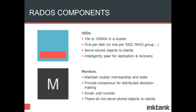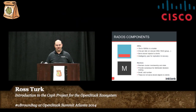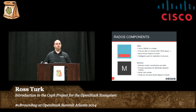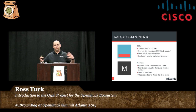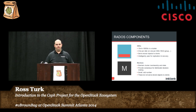Monitors, on the other hand, are a fewer number — a small, odd number. Three is the right number for most clusters; some have five. You want a small odd number because monitors vote. Their job is to understand the state of the cluster: who's in, who's out, who's up, who's down, which OSDs are part of the cluster. They also maintain what's called the crush map, which is the mapping of the cluster architecture used to determine where to put data. The monitor does not serve objects to clients — it's not part of the data path. The more monitors you have, the longer it takes for them to vote, so a small odd number is most effective.